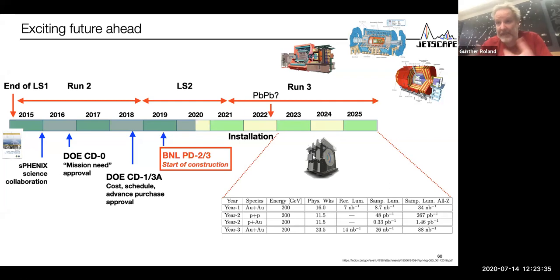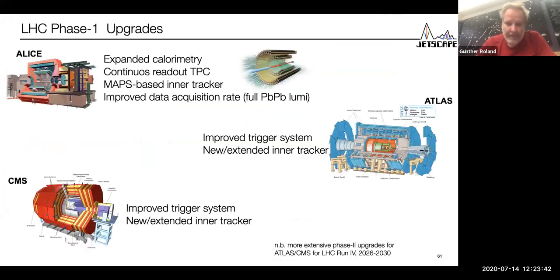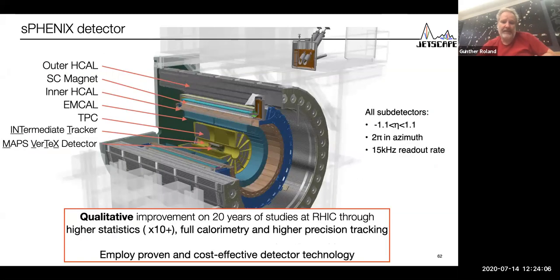At the LHC we'll get an order of magnitude more data plus enhanced instrumentation. sPHENIX will bring more than an order of magnitude for some measurements, factors of 20 or 50 more data than we have so far, plus enhanced experimental capabilities on the tracking and calorimeter side. Alice really is doing a complete renovation of the experiment. Atlas and CMS, their big upgrades will come after run three.